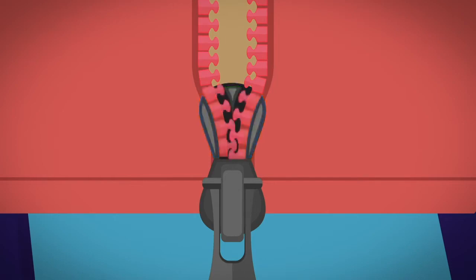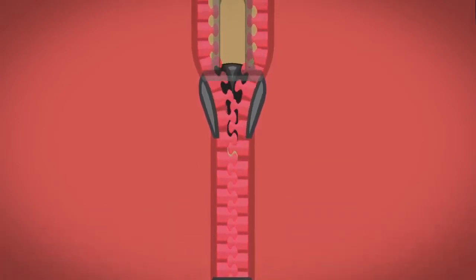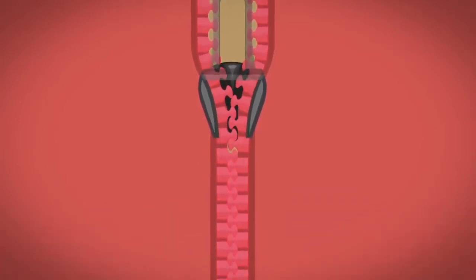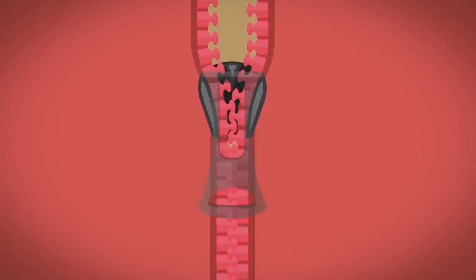The teeth of the zip fit into the grooves of the wedges and when the slider is pulled up it presses one row of teeth on top of the other row of teeth. This makes the teeth lock together tightly.